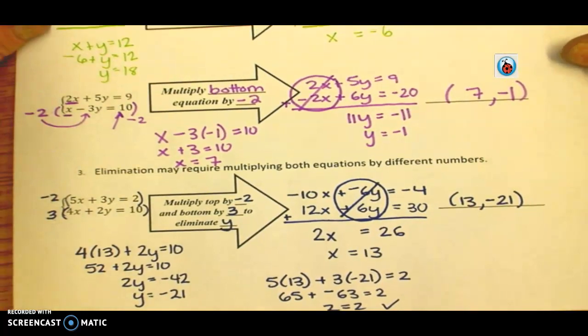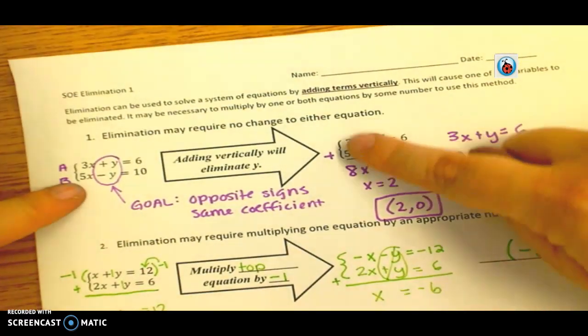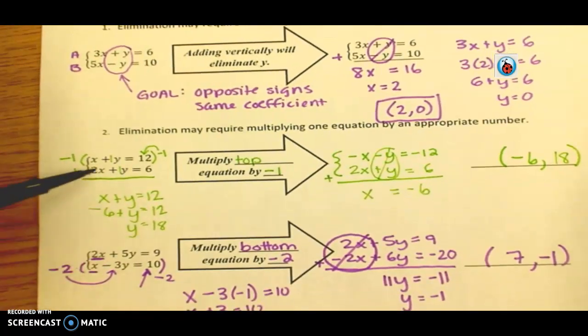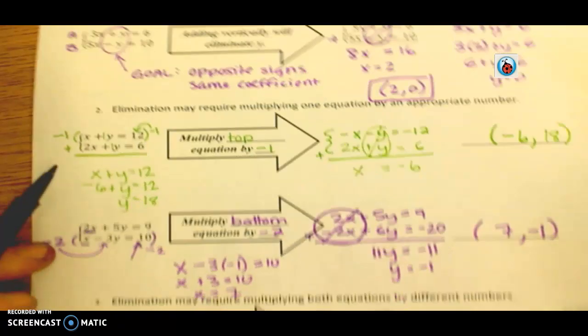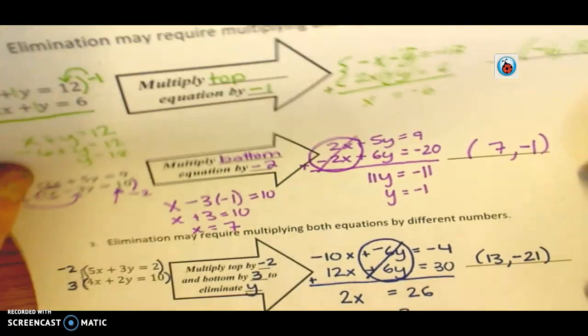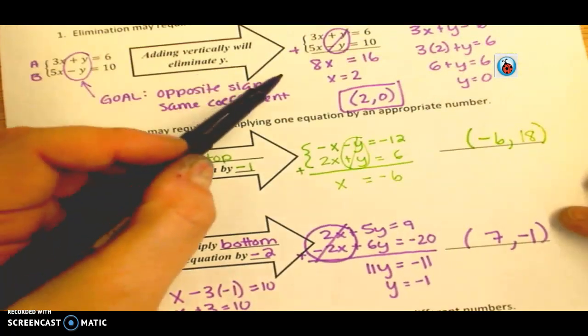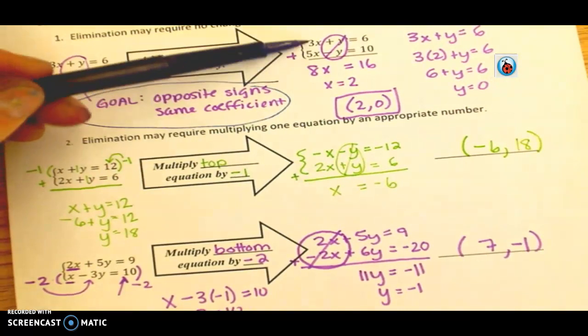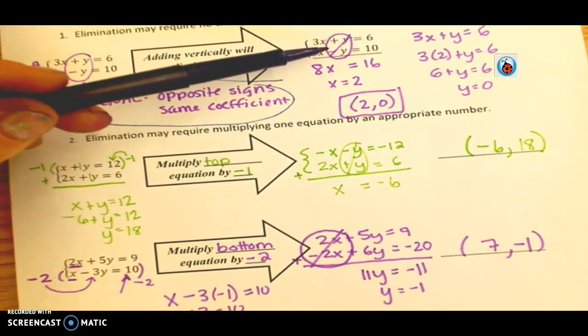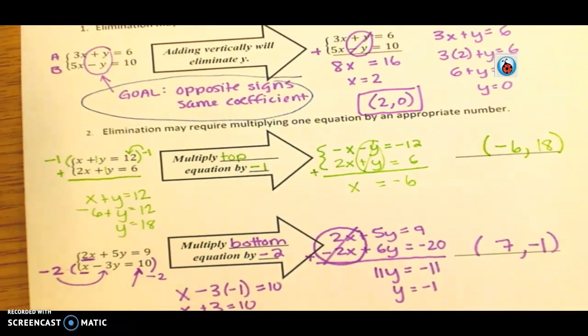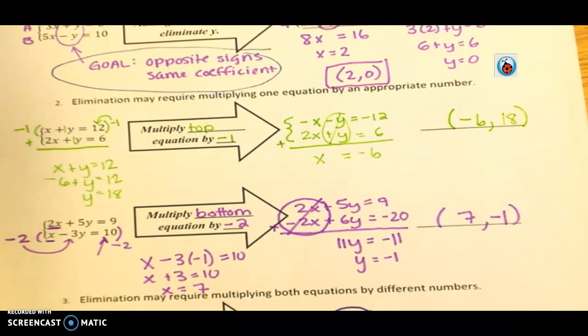So, just to recap. Sometimes when you add, they naturally cancel out. Sometimes, you need to send in one hired goon to change one of the equations. Sometimes, you need two. Okay? But, no matter what, the goal is always to have opposite signs and the same coefficient. And also, make sure that all your terms are lined up with one another. Okay? So, if they're already lined up, that means that elimination method is probably the best one to use. Alrighty. Let me know if you have any questions. Toodles.